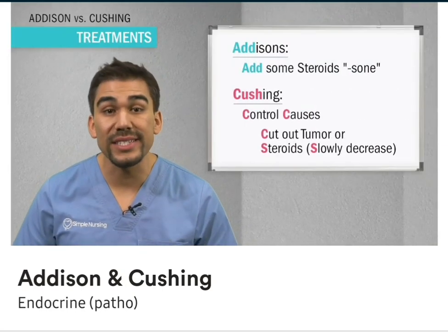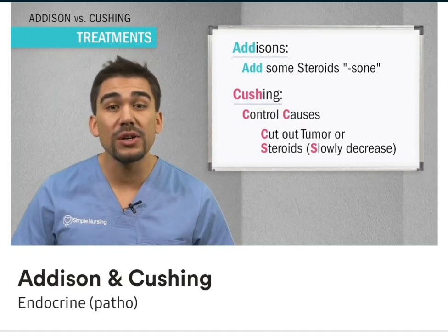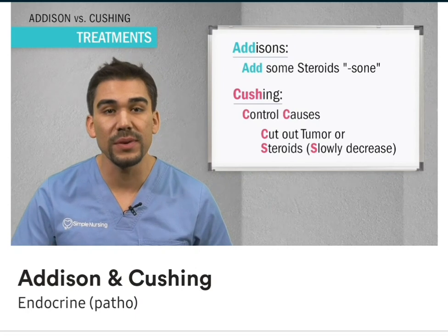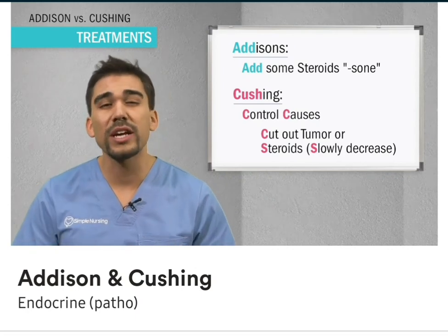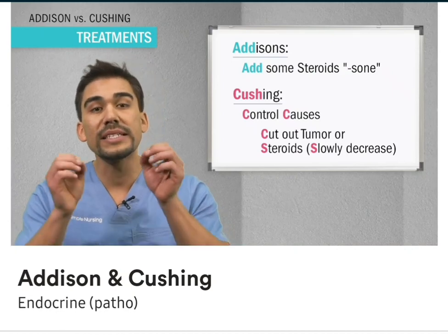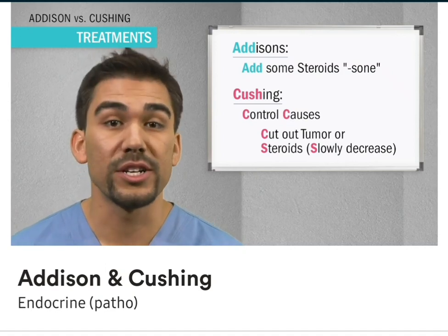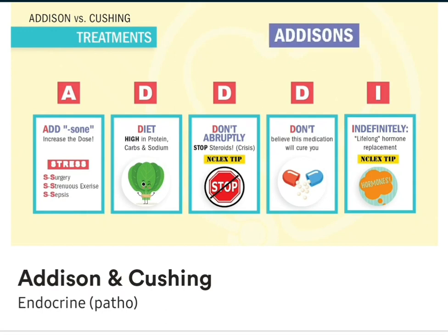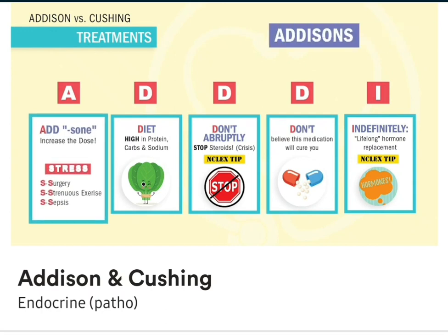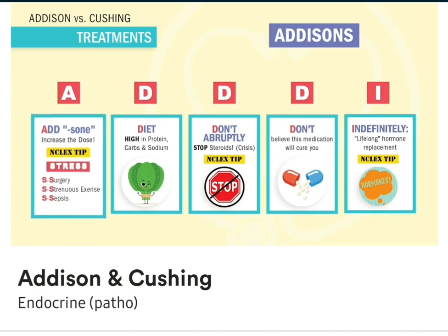The treatments are pretty simple. For Addison's, we just add some steroids ending in -zone, like prednisone and hydrocortisone. We can also add IV maintenance fluid to bring that blood pressure up. In Cushing's, we control the causes by cutting out the tumor or slowly decreasing those steroids causing the problem. We always slowly decrease those steroids to prevent that low blood pressure crisis. For Addison's, use the acronym ADDIE: we add -zone steroids during times of stress to avoid Addisonian crisis. Big test tip — teach patients to tell their doctor about increased stress from work, school, or emotions, because we have to increase their steroid doses during stressful times.